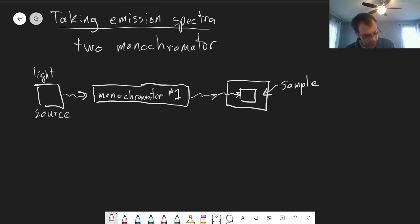So the light will come into our sample, and then this will excite the molecules, which then emit light via fluorescence or phosphorescence. And that light will go in all directions.